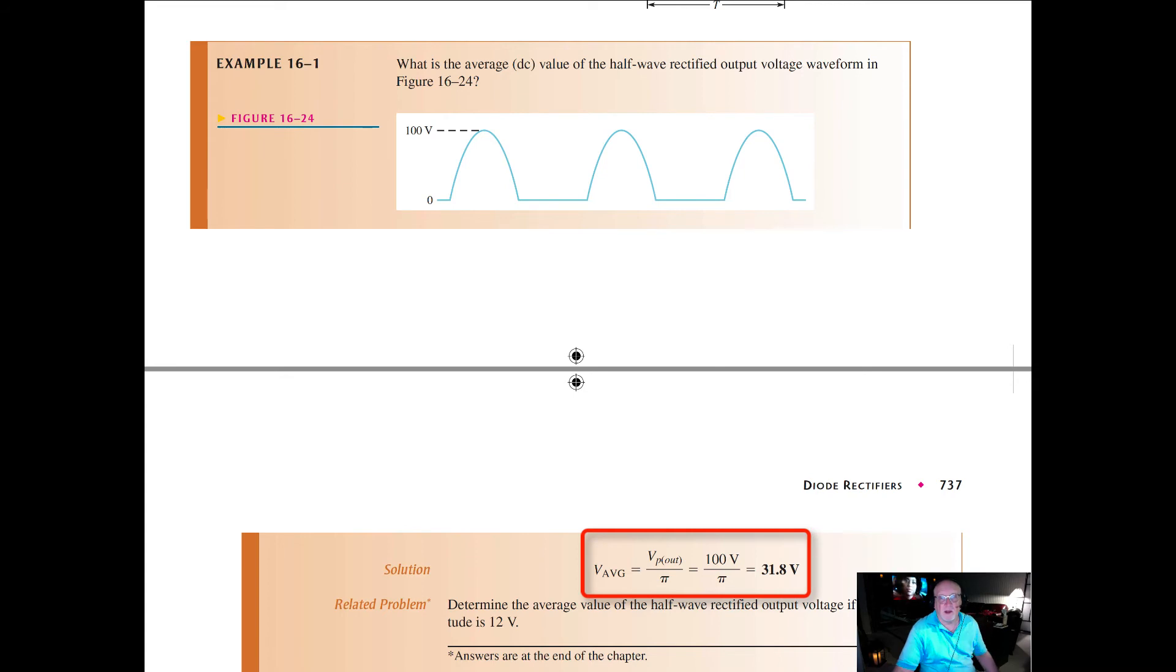31.8 volts is the average value of that pulsating DC. It's kind of crude DC, but it's DC nonetheless, because it's all in the positive range when you consider the alternations from zero to the average.